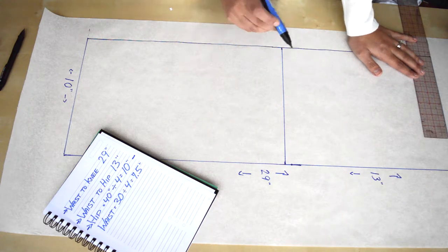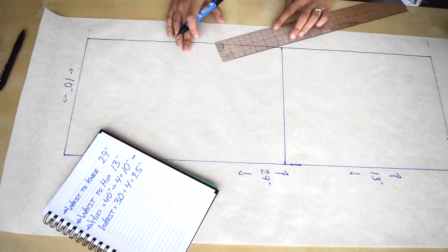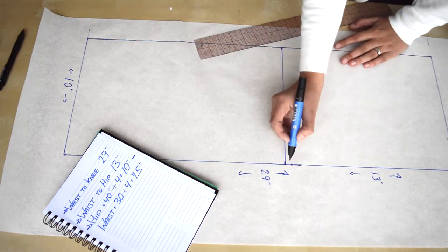Then I'm going to take a quarter of my waist measurement which is 7.5 inches and mark that with a dot along the top and connect it with a gentle slope towards my hip line.